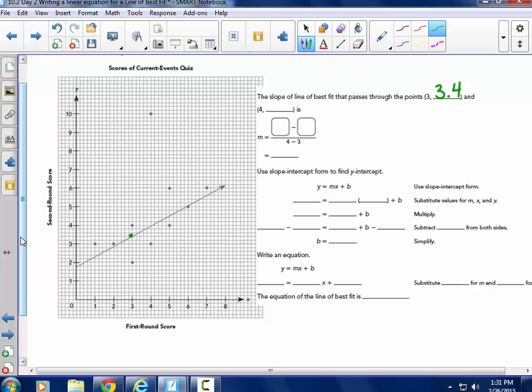And it does pass through 4, 4, whole number 4, 4. So it passes through the point. Nice, easy to read. So we need 4, 4 and 3, 3.4. So my slope, taking Y2 minus Y1, so 4 minus 3.4, that gives me 0.6. And 4 minus 3, my X values, gives me 1, so my slope is 0.6.